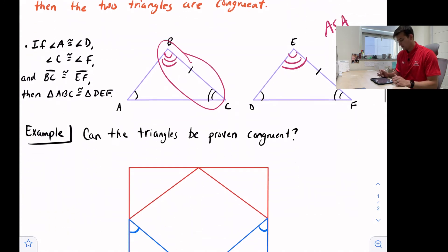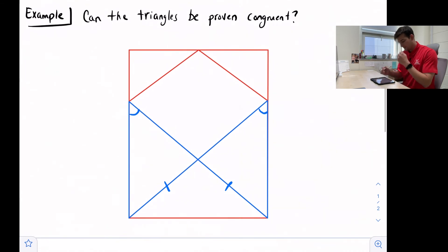So we're just going to look at one quick example using angle-angle-side. We have this diagram, and it says can the triangles be proven congruent. So we're looking at these two blue triangles, and they give us one angle that's congruent and one side that is congruent. So in order for us to use angle-angle-side, we need to find another angle that would be congruent.